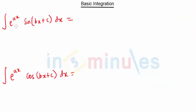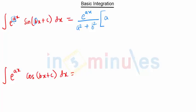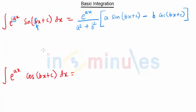Then we have the integration of e raised to ax times sine of bx plus c. This formula is nothing but e raised to ax upon a square plus b square, into a — that is the coefficient of x — times sine of bx plus c, minus b — the coefficient of b — times cos of bx plus c. So you have to remember this.